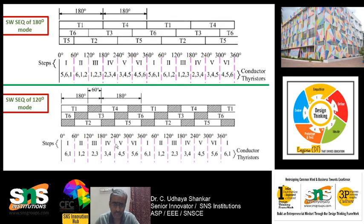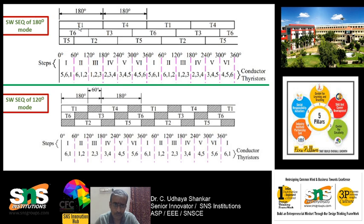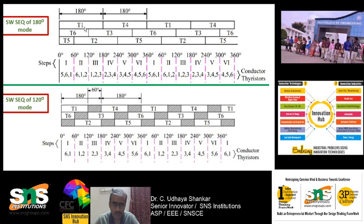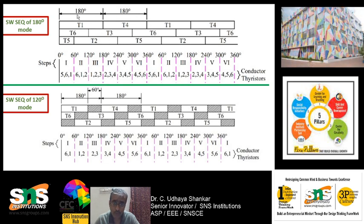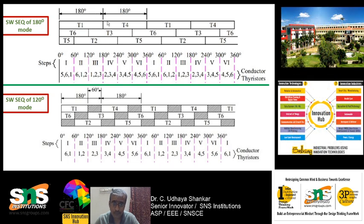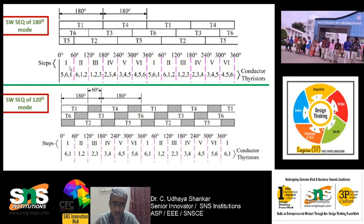Here is the switching sequence. In the 180-degree mode of conduction each and every transistor — for example T1 and T4 — T1 produces positive voltage and T4 produces negative voltage, and both are switched on for 180 degrees. The positive half cycle is 180 degrees and the negative half cycle is the next 180 degrees, totaling 360 degrees. T1 is switched on for the full positive cycle and T4 is switched on for the full negative cycle.